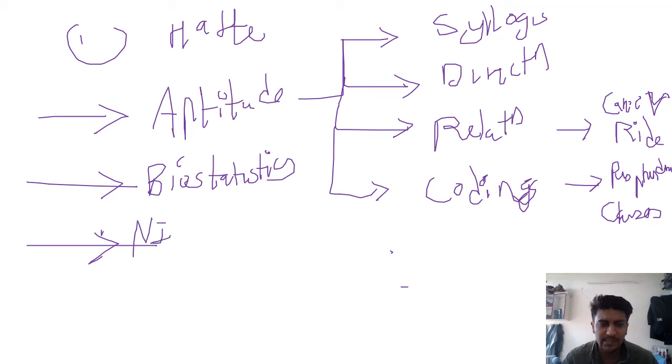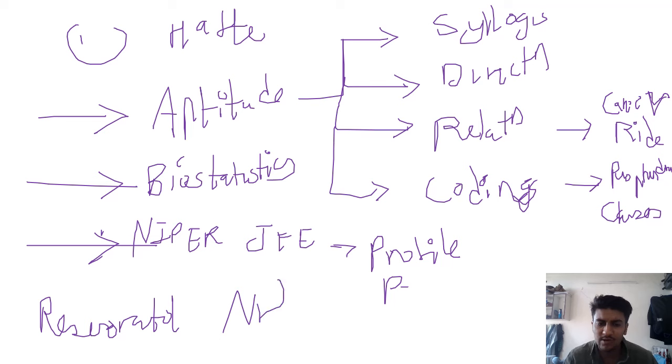Oxidative stress is very common - that is Nrf2, it acts on Nrf2 receptor and ion channels. So you should know about their areas of interest. Suppose someone's area is cardio, then you prepare cardio well. If someone's is respiratory, then you prepare respiratory well. That is very important -